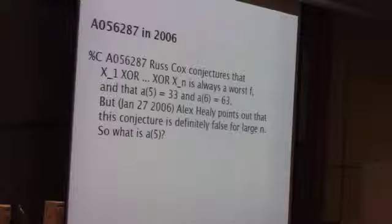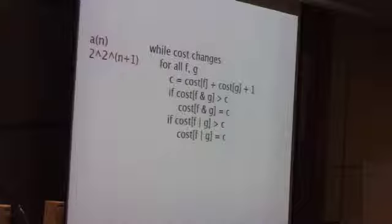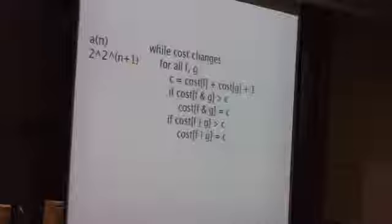Alex and I would actually throw that back and forth at each other: so what is a of 5? It seemed pretty well out of reach, because you've got this algorithm here. The inner loop is doing all comparisons of functions. There's two to the two to the n functions. So there's two to the two to the n plus one pairs. As the algorithm proceeds, at the end of the first round, we know we've found all the functions of minimum cost one. At the end of the second round, we know we've found all the ones of minimum cost two. In the worst case, you might have to run this loop a of n times.